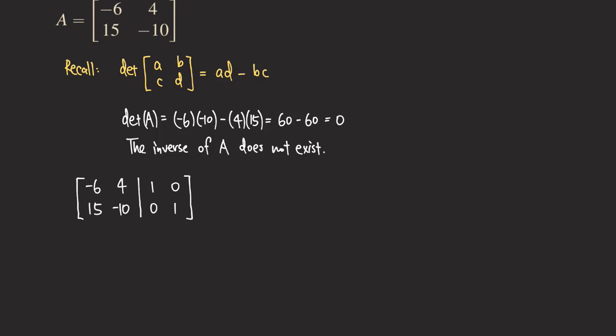We can try to do some row operations and turn this left side here into an I. So we can start by trying to deal with fractions. All we need to do is reduce this, so we can do something like negative 1 over 2, row 1. Then we are going to get 3 and then negative 2, and then we are going to have fractions on the side, so we get negative 1 over 2 and then 0. What about the second row? We can also do the same thing but actually just leave it. So we have 15 and then negative 10 and then 0, 1.